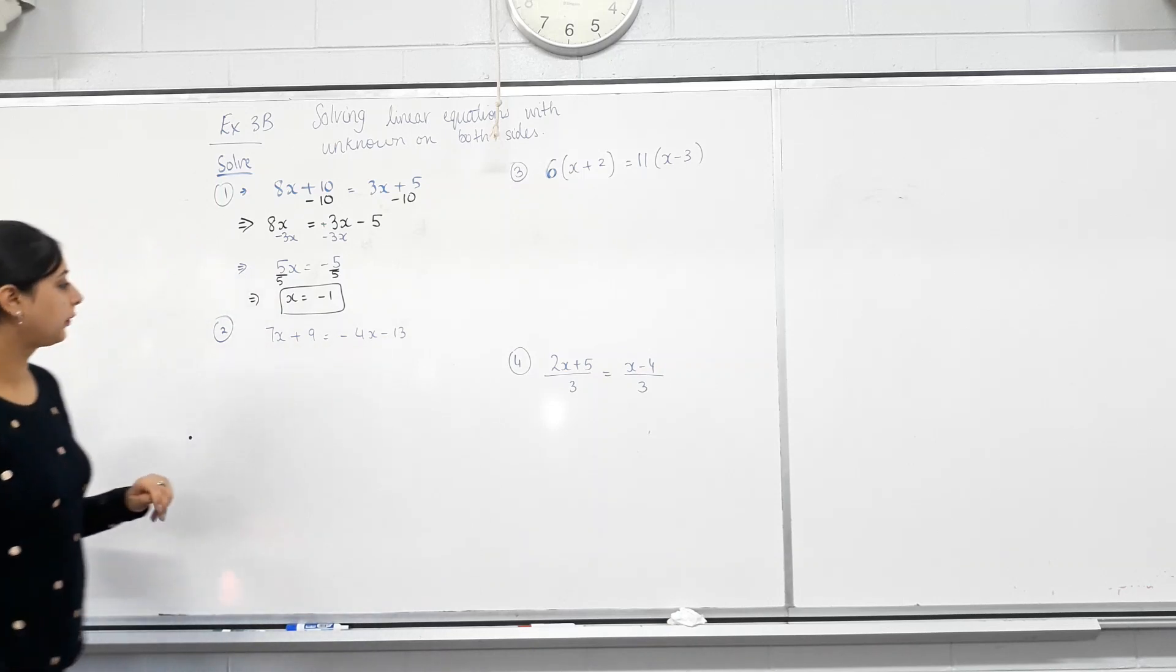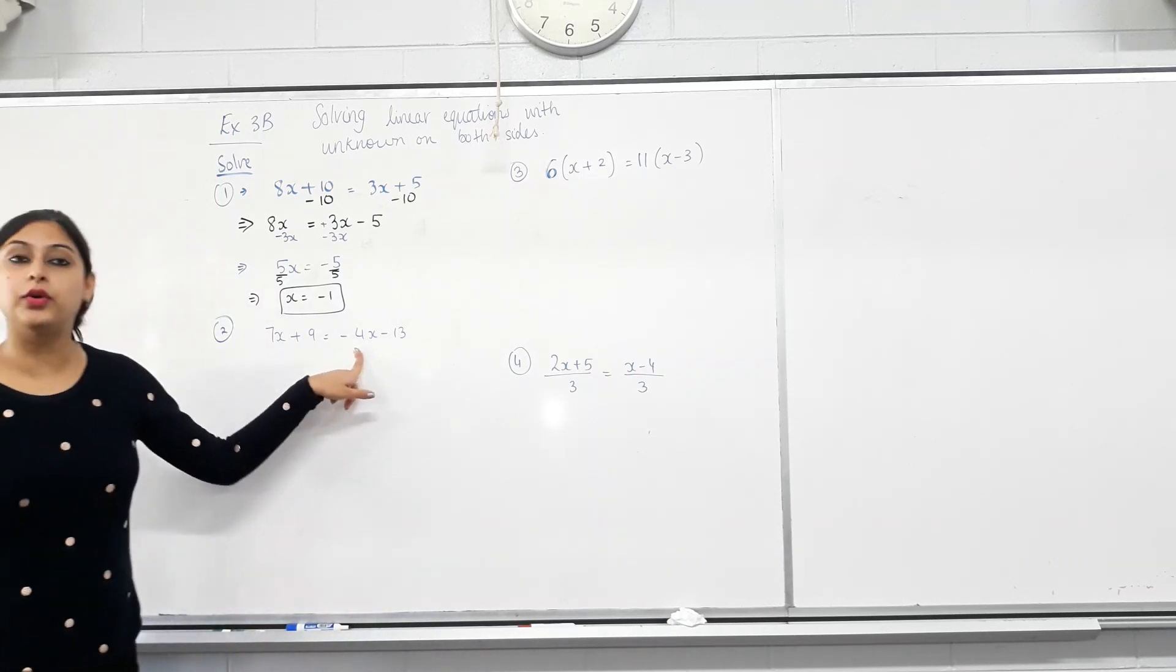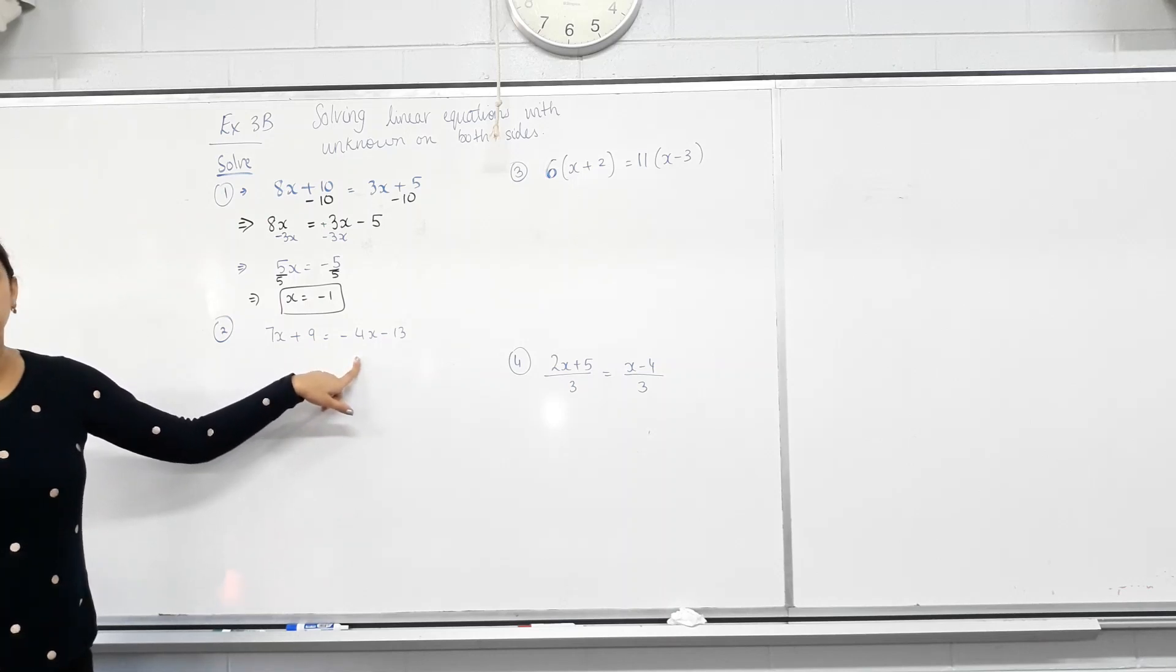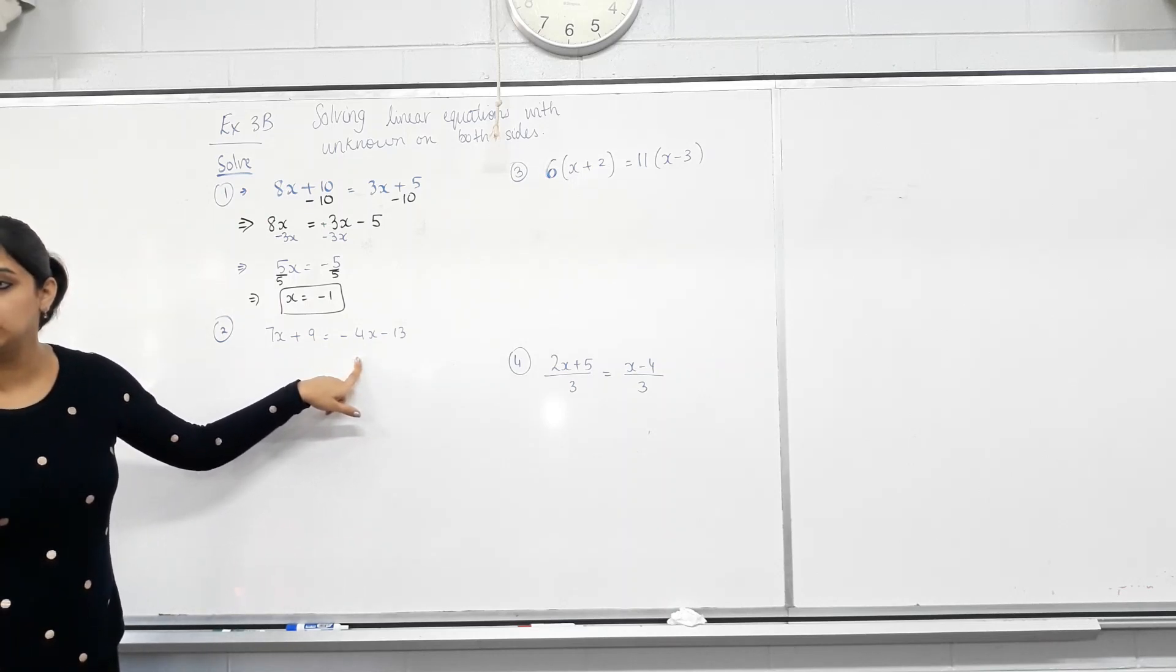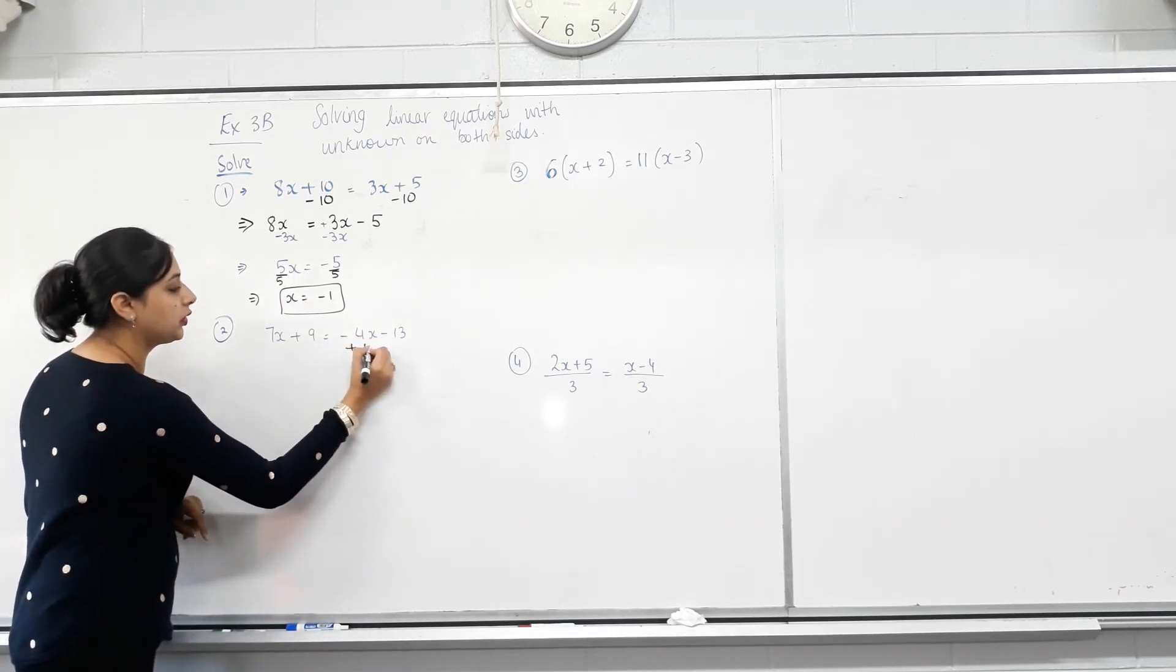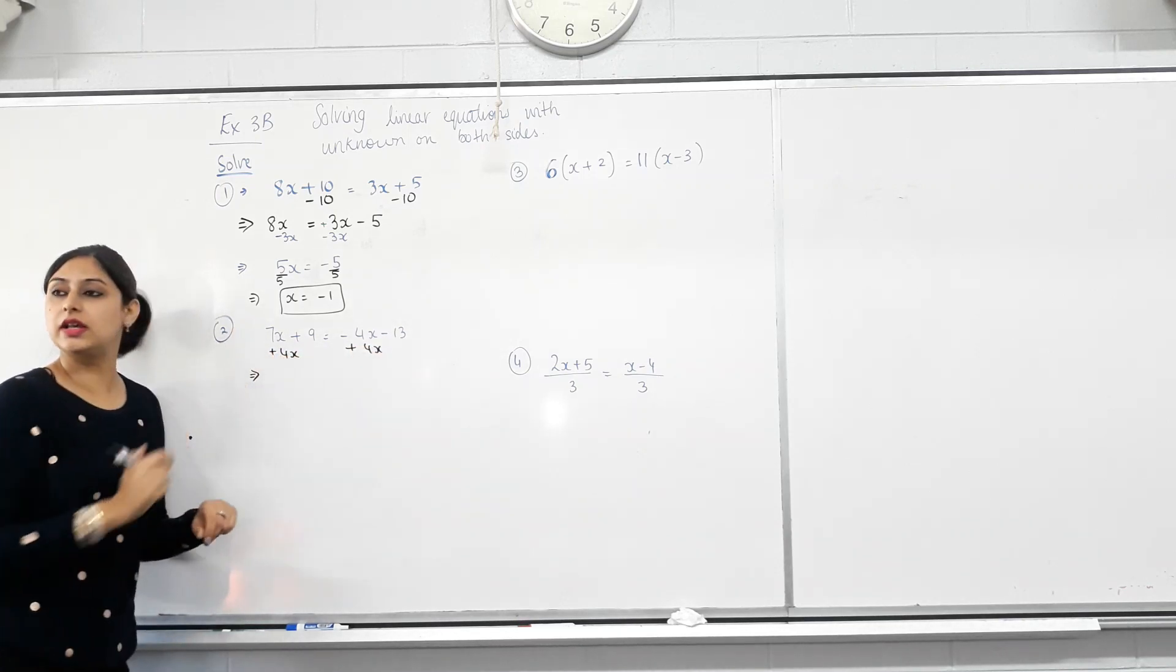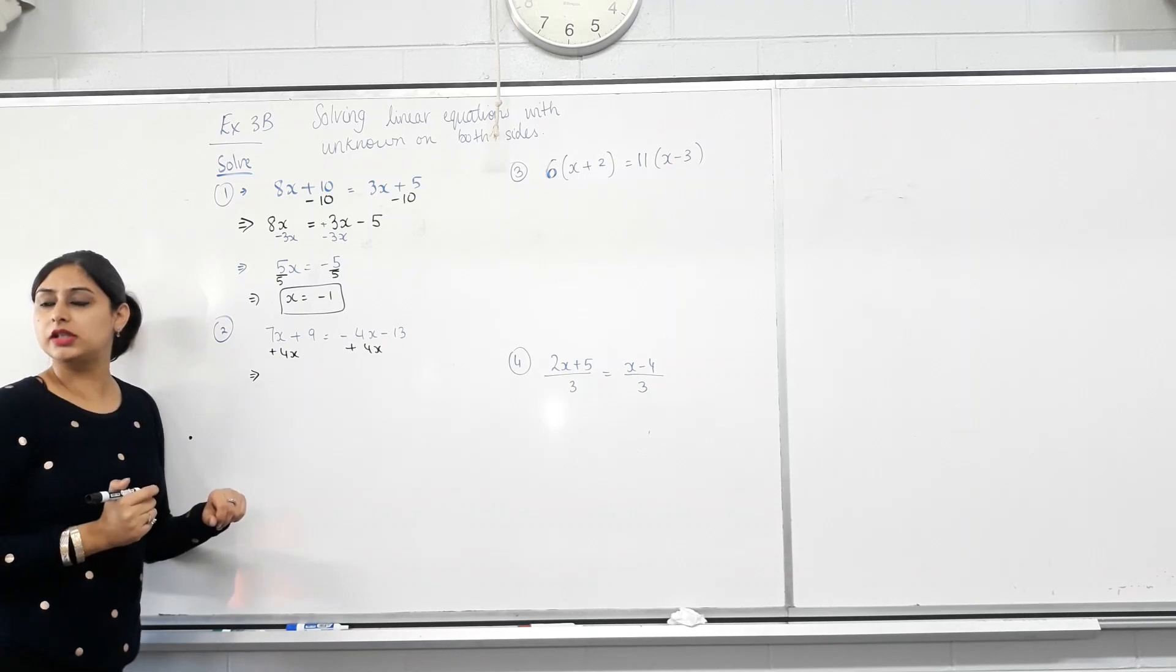Next one. We need to move the 4x to the left hand side. It's minus 4x. What's the opposite of minus 4x? Plus. On both sides. Like terms? 7x and 4x? Yes. 7x plus 4x's. How many x's? 11x.